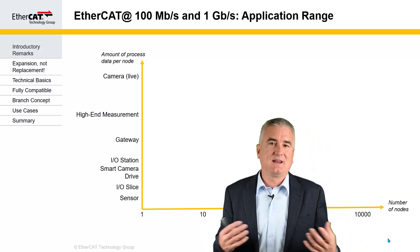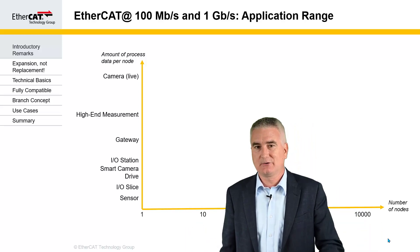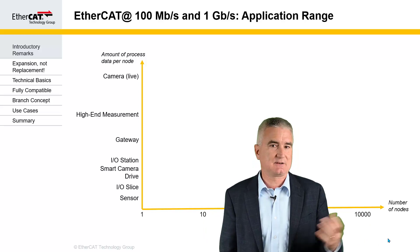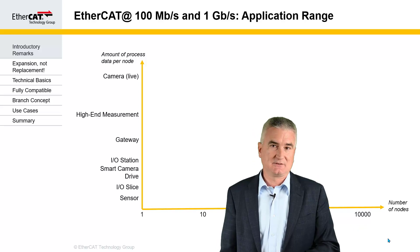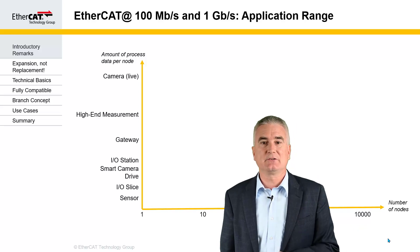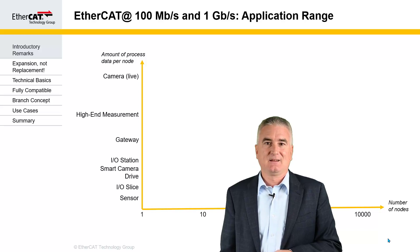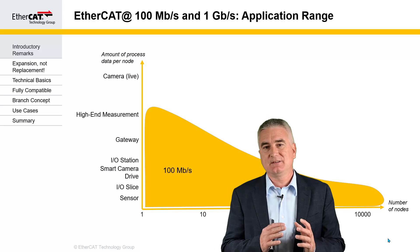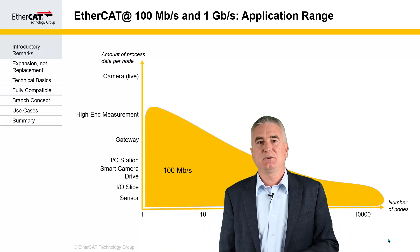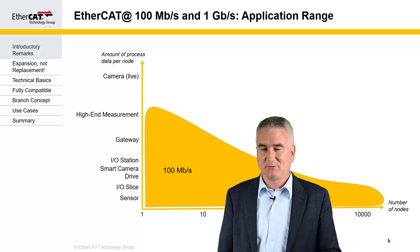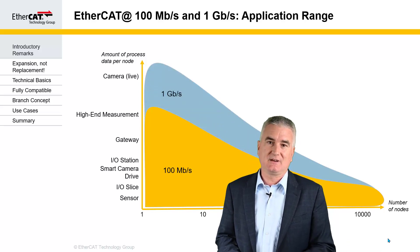Let's have a look at the application range of EtherCAT. Most fieldbus devices only generate and consume a small amount of data, such as a sensor, an IO device, or even a drive and a smart camera. Even an entire IO station only needs a few bytes and not kilobytes. EtherCAT is capable of handling all those devices, even up to a very large number of nodes in a network. But if we talk about devices with even more bandwidth requirements, there are some limitations that we overcome with introducing EtherCAT-G.